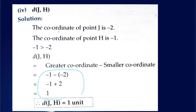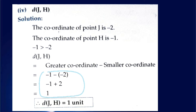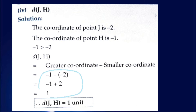Minus minus becomes plus, so our next step gives minus 1 plus 2. Here we have two signs, minus and plus — minus plus is minus. So we do 2 minus 1 equals 1, and we put the sign of the greater number. Here 2 is the greater number and it carries a plus sign. So the answer is plus 1. Therefore the distance between J and H is 1 unit.